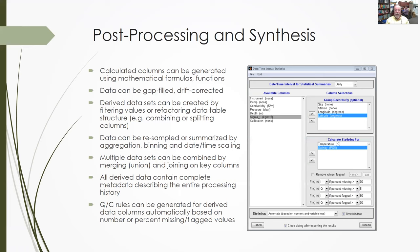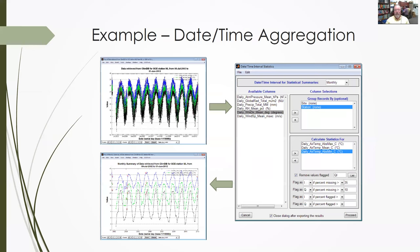QC rules can be generated for automatically flagging synthesized data. This is the date-time interval tool going from 15-minute data to, in this case, daily data. It shows you the list of measured variables and gives you options to group records and calculate statistics for specific variables. The dialog in the bottom right allows you to set criteria to flag derived data based on how many flagged or missing values there were in the primary data. That generates a whole new data structure with all the metadata as well as the flagging. Here's an example pulling some daily data at ClimDB and running through this tool to generate monthly statistics — if there are more than 35% missing values in a given month, flag that as invalid; over 10% flag as questionable.